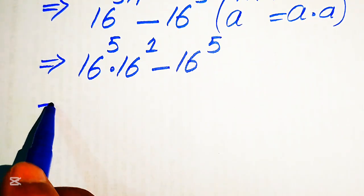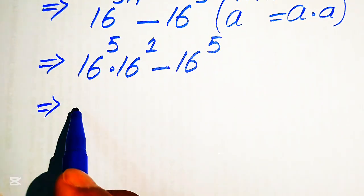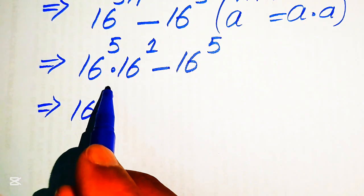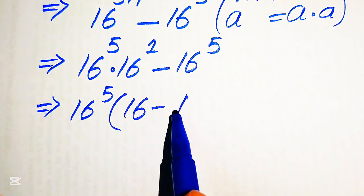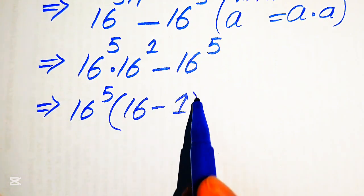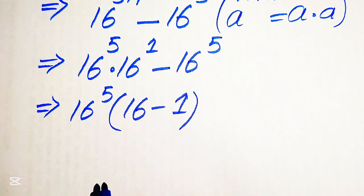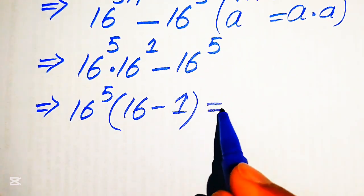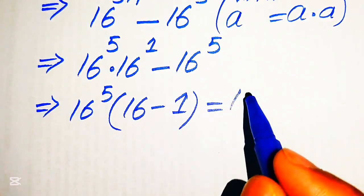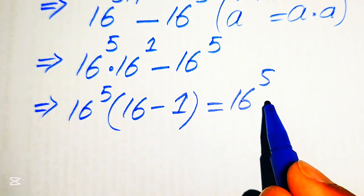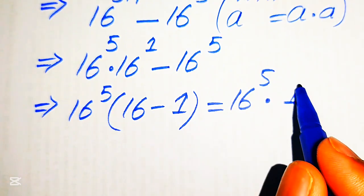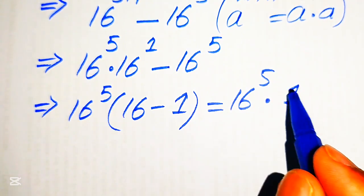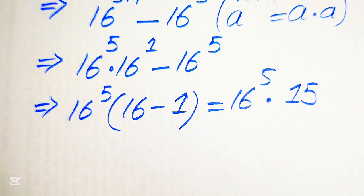In the next step we take 16 to the power of 5 as common, and we get the remaining values as 16 minus 1. Further in the next step we have 16 to the power of 5 multiplied by 16 minus 1, which equals 15.